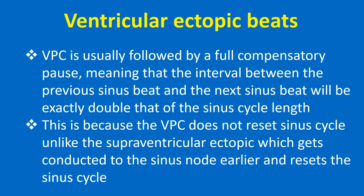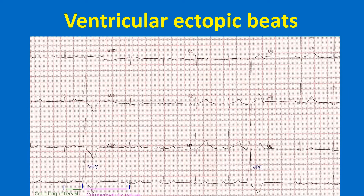This is because the VPC does not reset the sinus cycle, unlike the supraventricular ectopic, which gets conducted to the sinus node earlier and resets the sinus cycle. The basic rhythm in this ECG is sinus rhythm at around 60 per minute.